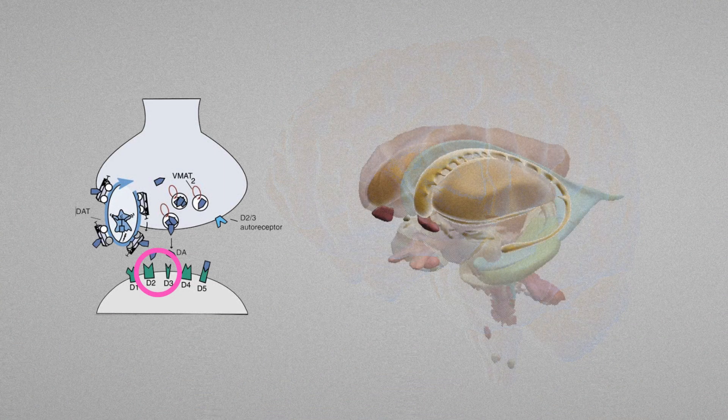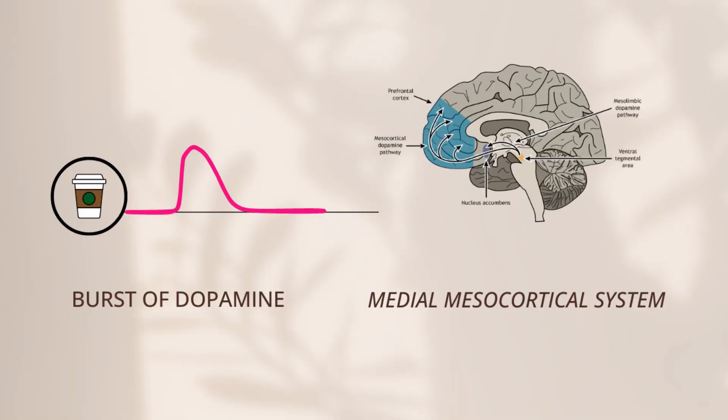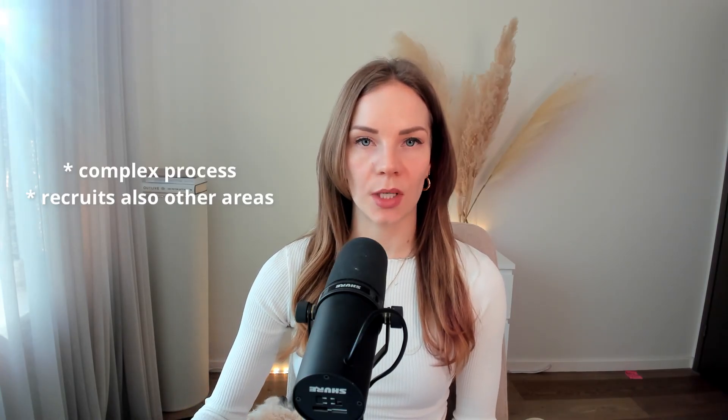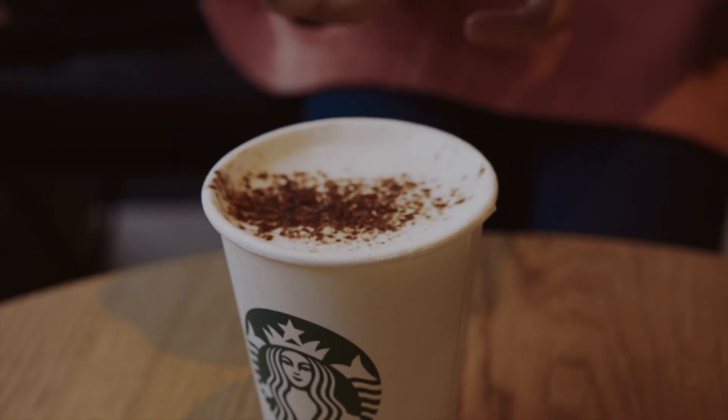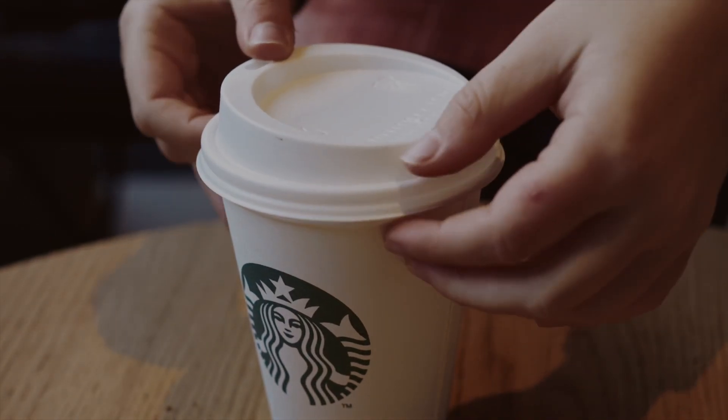The caffeine also upregulates striatal D2 and D3 dopamine receptors and increases your alertness, so your brain interprets this as a reward. This activates the medial dopamine system, which runs from the ventral tegmental area and ventromedial substantia nigra to the anterior cingulate cortex and medial prefrontal cortex. This system releases a phasic burst of dopamine, marking the rewarding feeling and the associated cues — the coffee house, what drink you got, the movements you made, your order, the type of coffee, and so on.